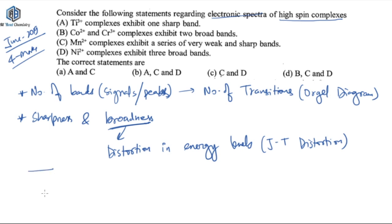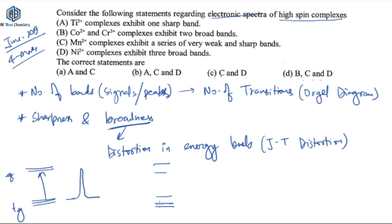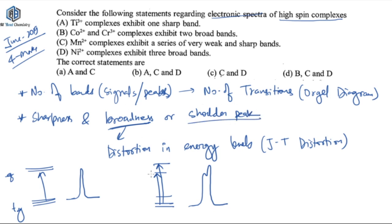Consider a molecule where the t2g orbital is at lower energy and the eg orbital is at higher energy, with a transition between them — in that case you get a sharp peak. But if Jahn-Teller distortion is present, then t2g splits into two different energy levels and eg also splits into two different energy levels. The transitions from the ground state now give two very close transitions, so instead of a sharp peak you get either two peaks with a shoulder or a broad peak.